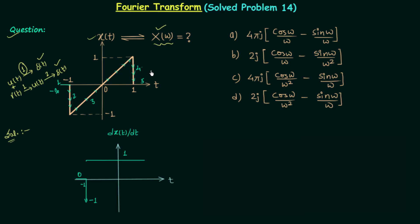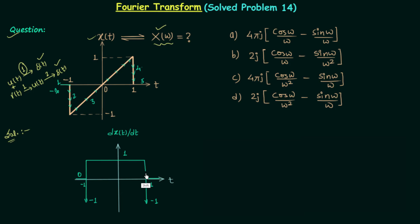The slope of the fourth line is infinity, so we get an impulse at t = 1 with strength minus one. The fifth line has slope equal to zero from t = 1 to plus infinity, so the waveform is flat there. Joining all the points gives us the complete waveform of dx(t)/dt, which contains two impulses.